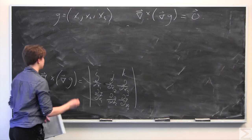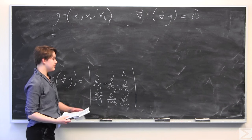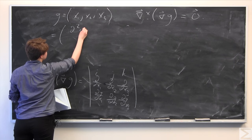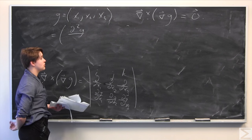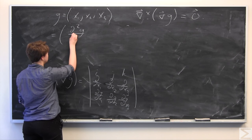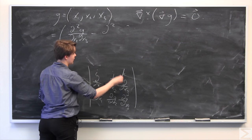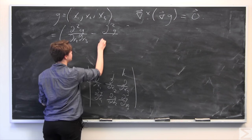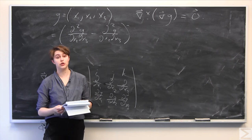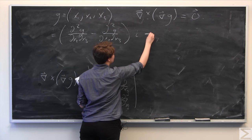We take the determinant of this matrix. For the i component, we have (∂/∂x2)(∂g/∂x3) minus (∂/∂x3)(∂g/∂x2), which simplifies to ∂²g/∂x2∂x3 minus ∂²g/∂x2∂x3. Since g is continuously twice differentiable, the order of differentiation doesn't matter. This is all times i, and then minus for the cofactor expansion.